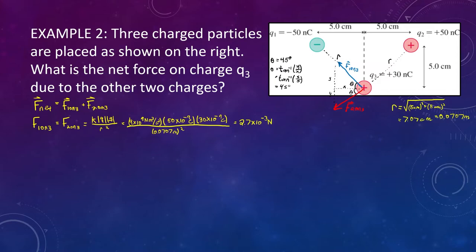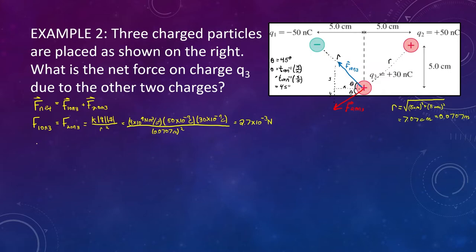We have both force values, but we can't directly add these — we can't just say 2.7 times 10 to the minus 3 plus 2.7 times 10 to the minus 3 because they point in different directions. We need to split this up and figure out the x and y components of each of these two vectors. Once we do that, we can add the two x values together and add the two y values together. So our goal is to find F1 on 3x, F1 on 3y, F2 on 3x, and F2 on 3y — four values.